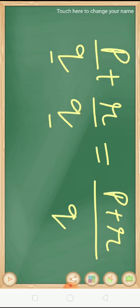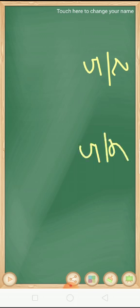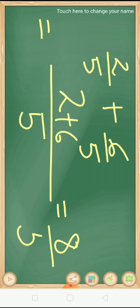Let us understand with an example. Let us add 2 upon 5 and 6 upon 5. As I have told you, our rule is to make the denominator same. But in this question, the denominator is same already. So we just have to simply write the denominator and add the terms present in the numerator. The terms are 2 and 6. 2 plus 6 is 8, and your answer will be 8 upon 5.